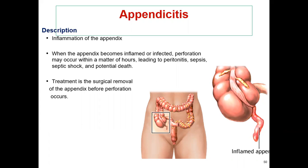The basic pathophysiology is that the opening of the appendix becomes obstructed. Obstruction can occur by fecal substance, tumor, or any kind of infection, resulting in inflammation, ischemia, and bacterial overgrowth.